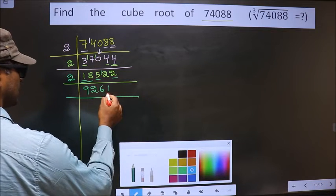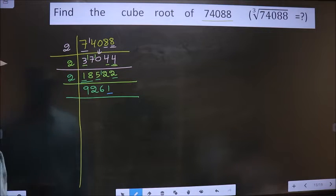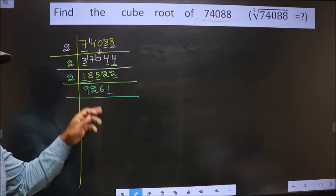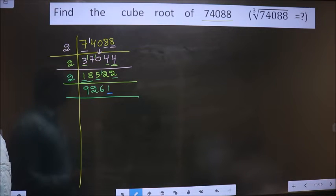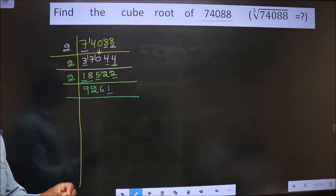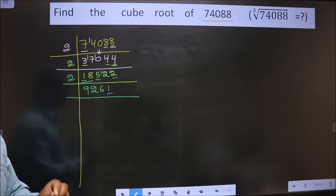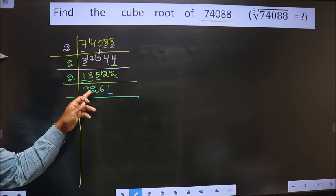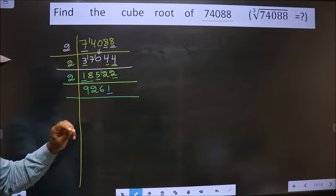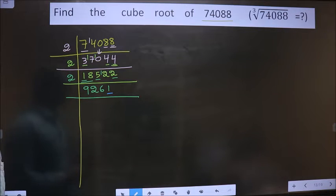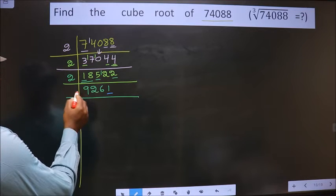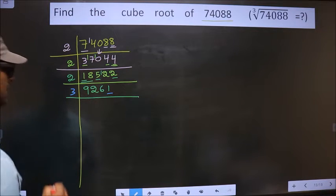The last digit is 1, which is not even, so this number is not divisible by 2. The next prime number is 3. To check divisibility by 3, we add the digits: 9+2+6+1=18. Is 18 divisible by 3? Yes. So this number is also divisible by 3.